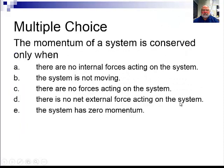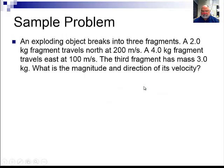Here's your multiple choice question. Now here's a sample problem. This is an explosion. We have an exploding object breaking into three fragments. We have a two kilogram fragment that travels north at 200 meters per second. We have a four kilogram fragment that travels east at 100 meters per second. And then we have this third fragment that has a mass of three kilograms. What is the magnitude and direction of its velocity? So let's draw a picture. This is a vector problem. No lying there, it's a vector problem.